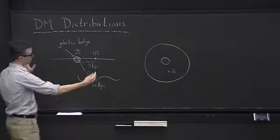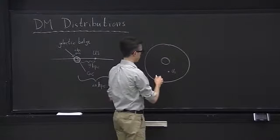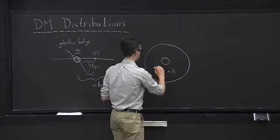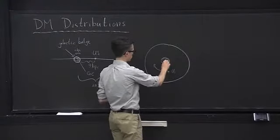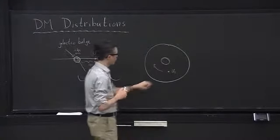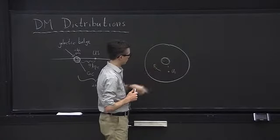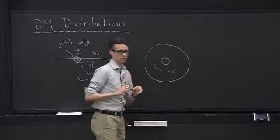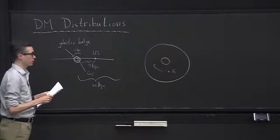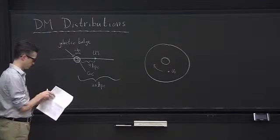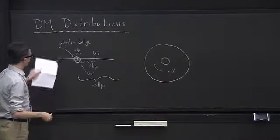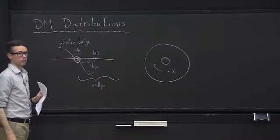This whole structure is rotating around the galactic center. Our local speed of rotation relative to the galactic center is roughly 200 kilometers per second — still non-relativistic, but pretty quick. This is the distribution of visible matter in our galaxy, but we also think our galaxy is surrounded by dark matter.